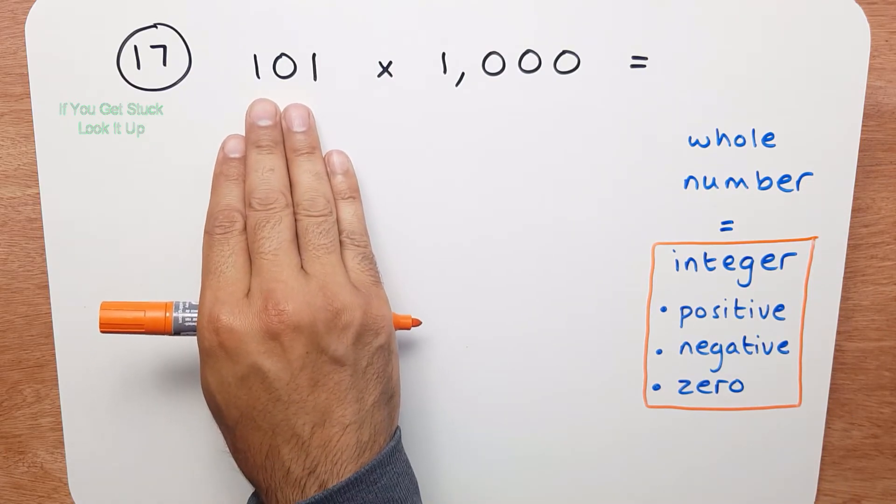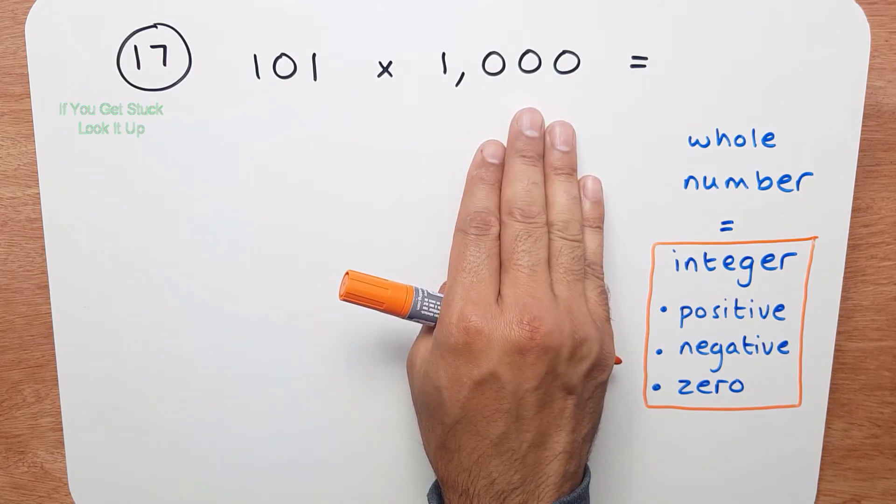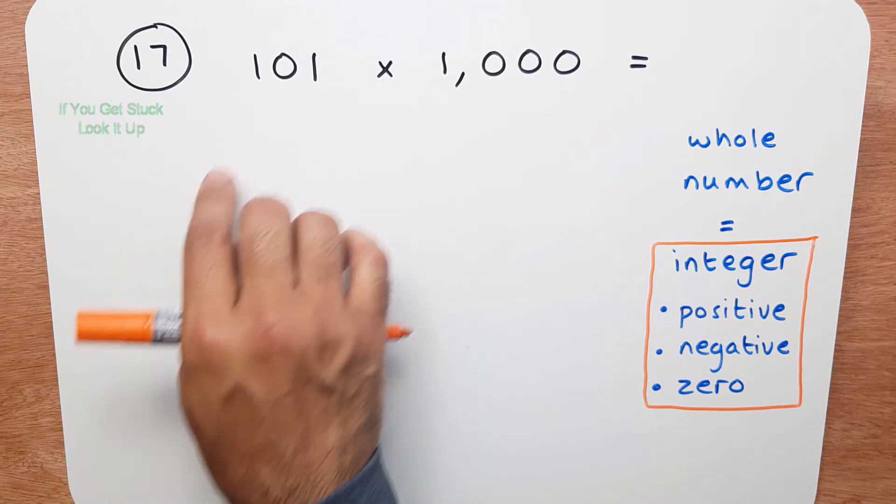Now what's the rule for multiplying a whole number by either 10, 100 or 1000? So the first thing you do is you write this number down here.